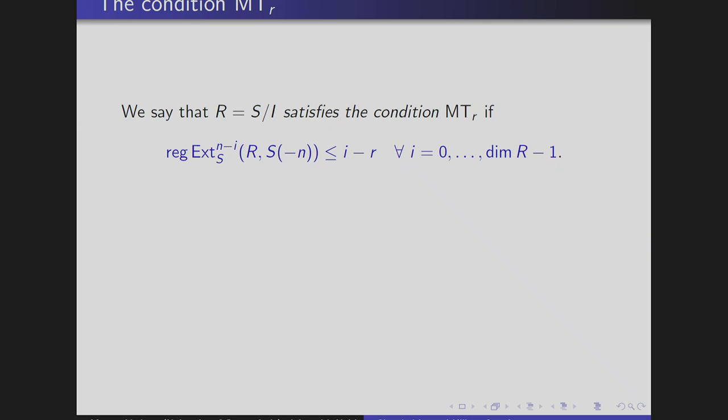This talk studies which conditions you need on the ring. We introduce a notion: we say that the ring R satisfies condition MT_r — MT comes from Murai-Terai — if there is an upper bound on the regularity of the deficiency modules of R, for any i from 0 to dim(R) − 1.